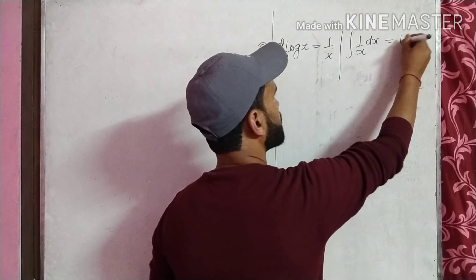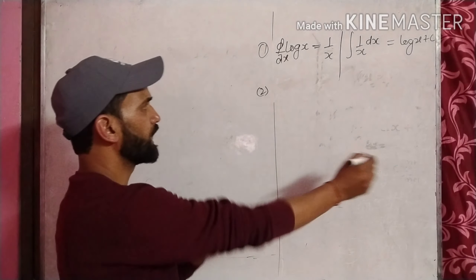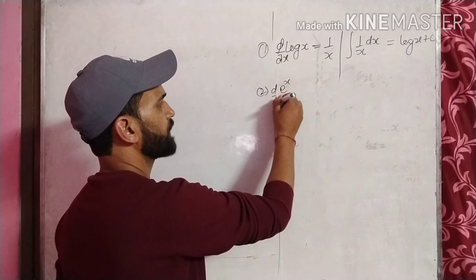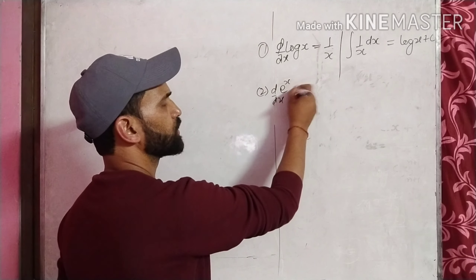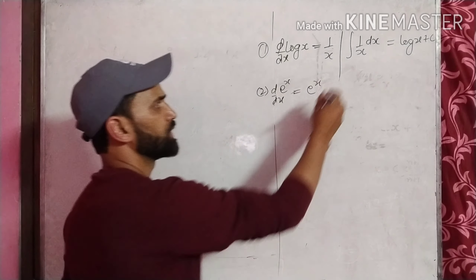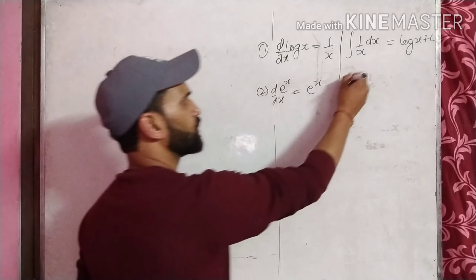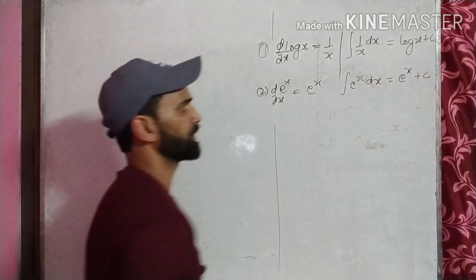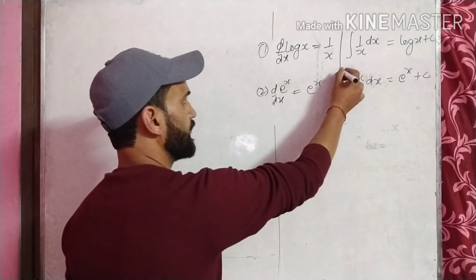The next function is exponential. अगर e^x की हम differentiation find out करते हैं, तो इसका differentiation e^x ही होता है। तो e^x की अगर हम integration find out करें, वो भी e^x ही आएगा, plus constant of integration।